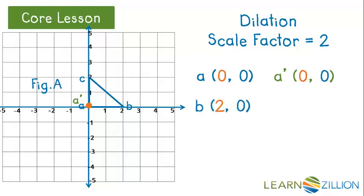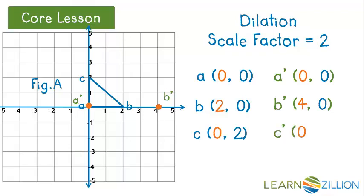Looking at the B coordinate, we see it's (2, 0). So 2 times 2 gives me 4, and 2 times 0 gives me 0. Looking at C, we see that it is at (0, 2). So 2 times 0 is 0, and 2 times 2 is 4.